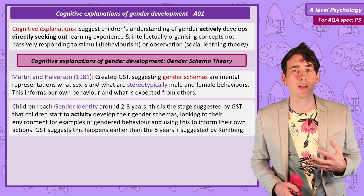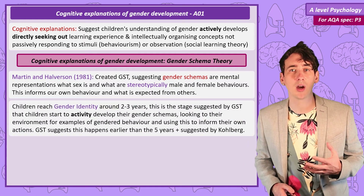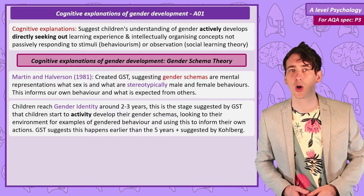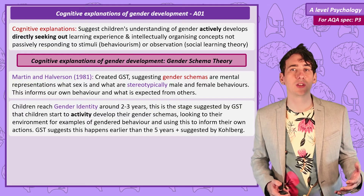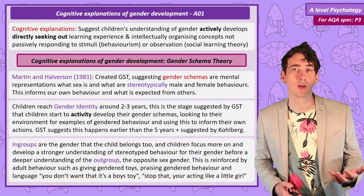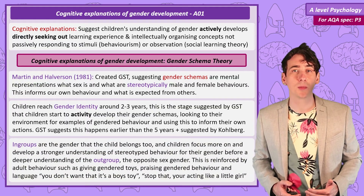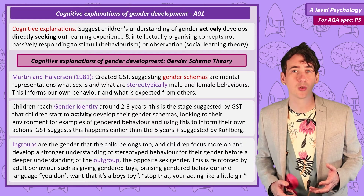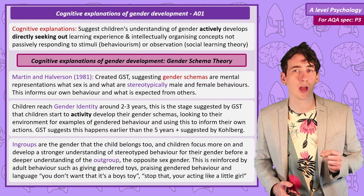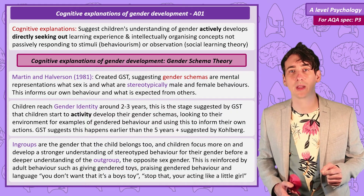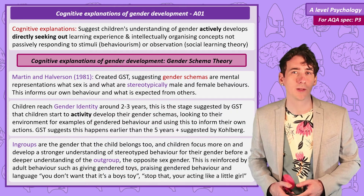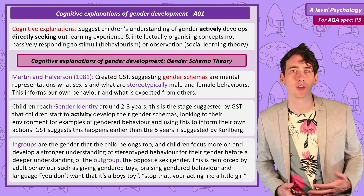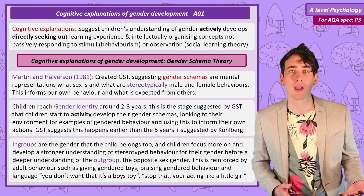Gender Schema Theory suggests that children develop their gender schema around the age of 2 or 3, not the 5 years as suggested by Kohlberg. Another important feature is the presence of in-groups and out-groups. The in-group is the gender that the child feels they belong to, and the theory suggests children will develop a stronger understanding of their own gender before developing an understanding of the opposite gender. This process is reinforced by what adults do, given certain toys and the language they use.